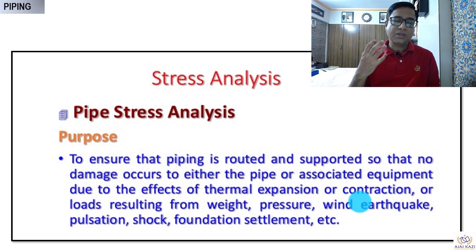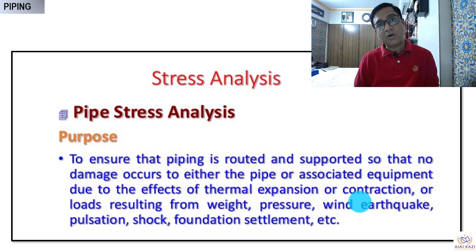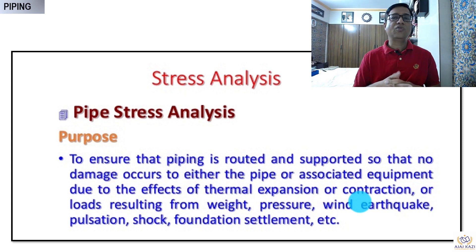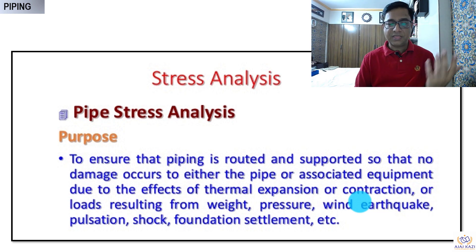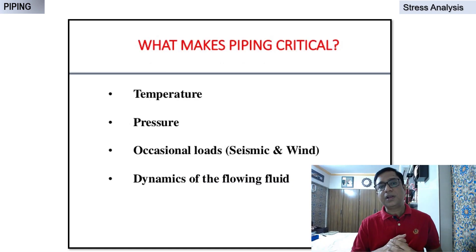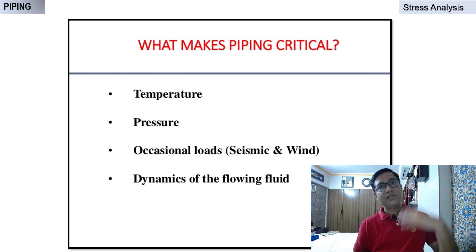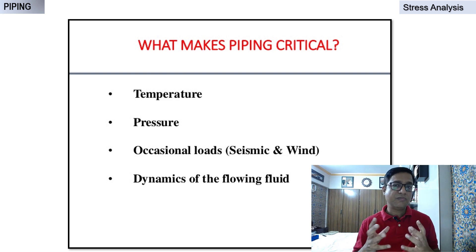The purpose of proper support is so that no damage occurs either to the pipe or associated equipment, because pipes are connected to various equipment. Damage can result from thermal expansion, contraction, load from weight, pressure, earthquake, or anything else. These combinations are used in stress analysis software to determine what makes piping critical. Key factors are the temperature of the water or fluid, the pressure, occasional loads such as seismic or wind load — especially important on top of buildings — and the dynamics of the flowing fluid.